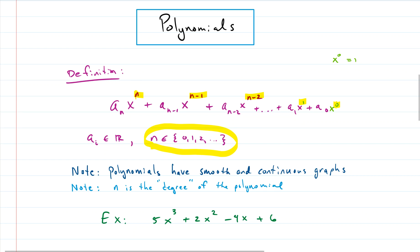We also have variables — x's — throughout. In our example the exponents are in decreasing order, with an implied one and an implied x to the zero. We line them up biggest to smallest. The biggest exponent is called the degree of the polynomial. In our example the biggest exponent is three, so this is a third-degree polynomial, or a polynomial of degree three.